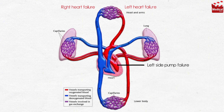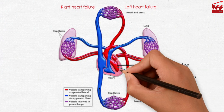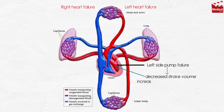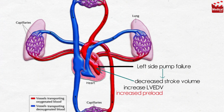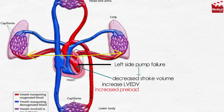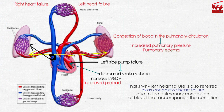First, left side pump failure occurs, leading to a decreased stroke volume — the volume of blood pumped by one ventricle during one contraction. This increases the amount of blood that fills the left ventricle during relaxation, called left ventricular end-diastolic volume, meaning increased preload. Blood then pools in the ventricle and atrium and backs up into the pulmonary veins and capillaries, leading to congestion in the pulmonary circulation, causing increased pulmonary pressure and pulmonary edema. That's why left heart failure is also referred to as congestive heart failure.